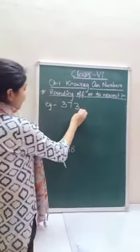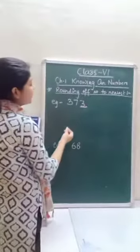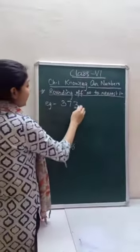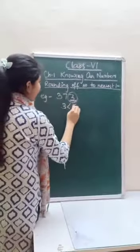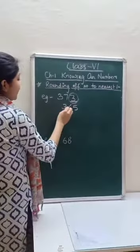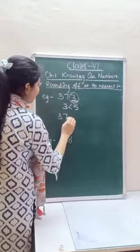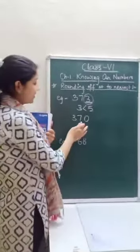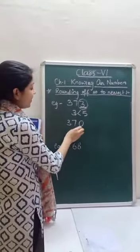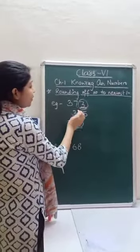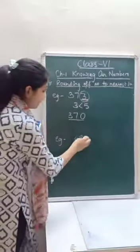For nearest ten, you have to see the last digit of the number. If the last digit is less than five, we have to put zero in the place of ones and the rest of the number will remain the same. So 370 is the round off number to its nearest ten.